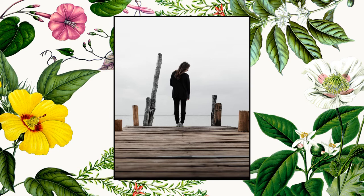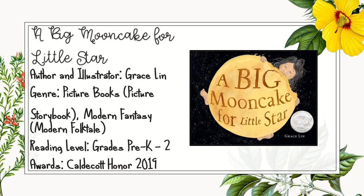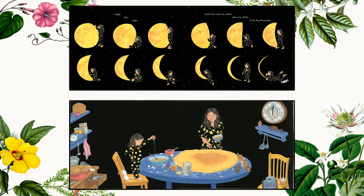Our final text is The Big Mooncake for Little Star. In this sweet story, Grace Lin shares with readers a modern myth that is based off her favorite Asian holiday, the Mid-Autumn Moon Festival. After Little Star and Mama make a big yellow mooncake, it needs to be left in the sky to cool. But it is too tempting for Little Star to resist taking a little bite each night. Surely Mama will not notice. It isn't long, though, before the full moon has waned into a complete new moon. A new mooncake must be made, playfully showing the loving relationship between mother and daughter.